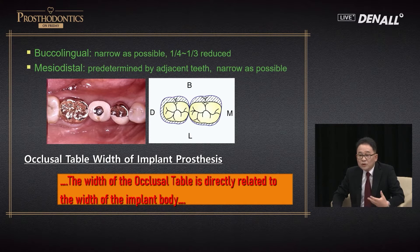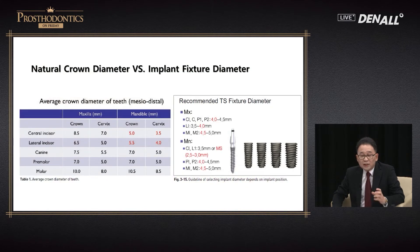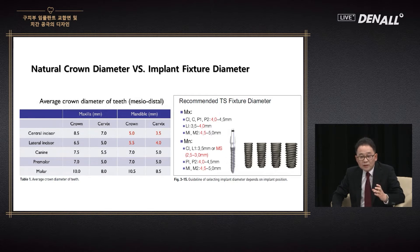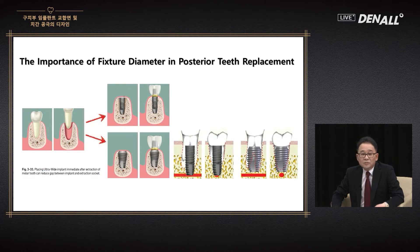The width of the occlusal table is directly related to the width of the implant placed, limited to the posterior region. The implant diameter should be at least 5 mm — these days, 6 mm is also available. Then we can make an appropriate emergence profile, and the mesiodistal width would be appropriate even though the occlusal table is reduced in size.